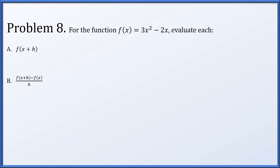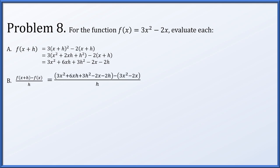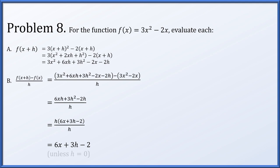Problem 8: for f(x) = 3x² - 2x, evaluate f(x+h) and [f(x+h) - f(x)] / h. For part a, f(x+h) = 3(x+h)² - 2(x+h); expanding and distributing gives 3x² + 6xh + 3h² - 2x - 2h. For part b, subtracting f(x), the 3x² and -2x terms cancel, leaving (6xh + 3h² - 2h) / h. Factoring h from the numerator and canceling with the denominator gives 6x + 3h - 2, valid when h ≠ 0.